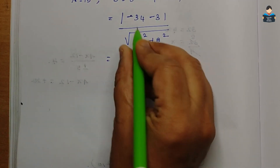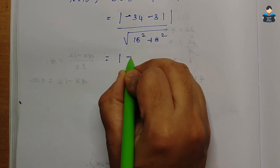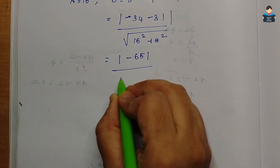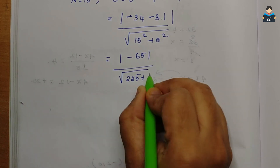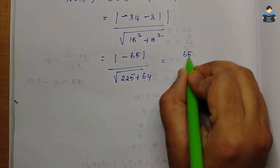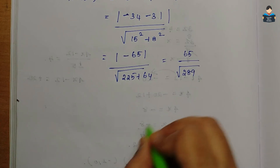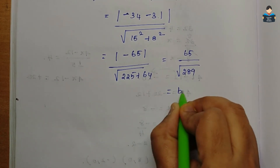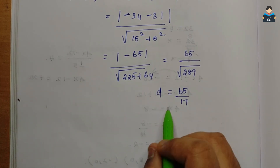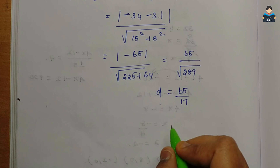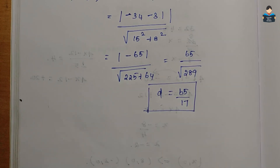So, minus 34 minus minus 31 — we solve this: minus 34 minus 31 by square root of 15 square is 225 plus 64. So, modulus of 65 by square root of 289. So, it will solve: 65 by 17. So, D value — the distance between the two parallel lines — is 65 by 17. This is the first sub-division's final answer.